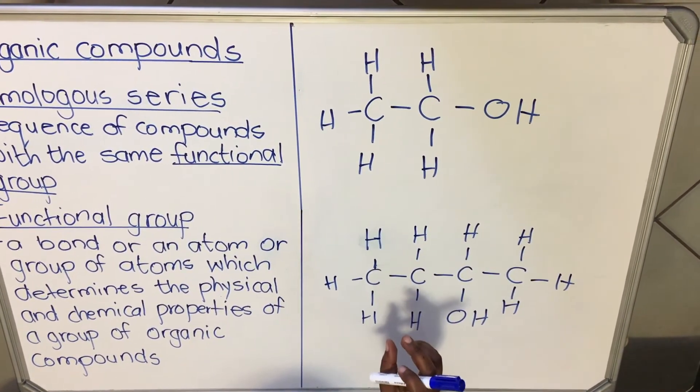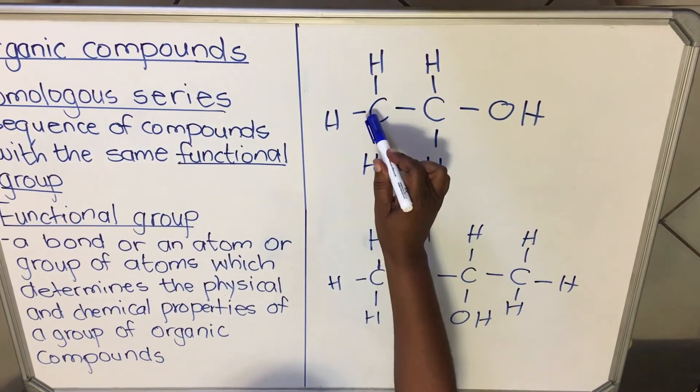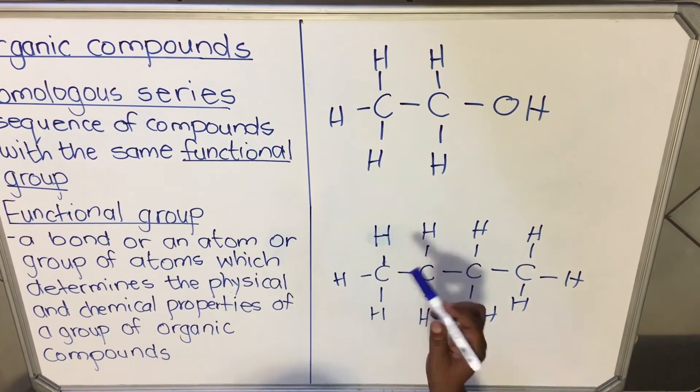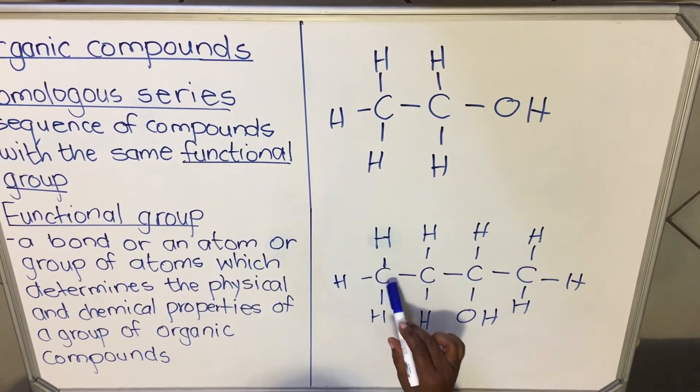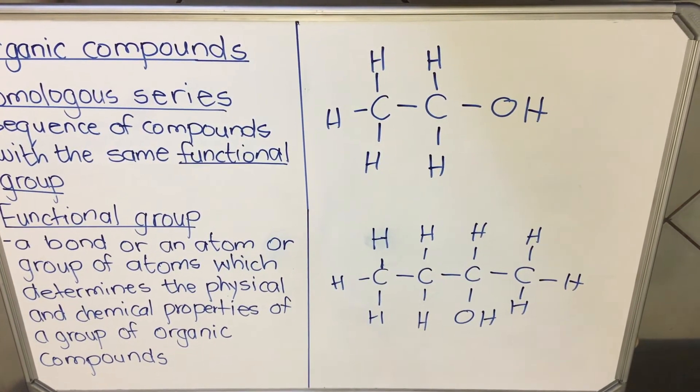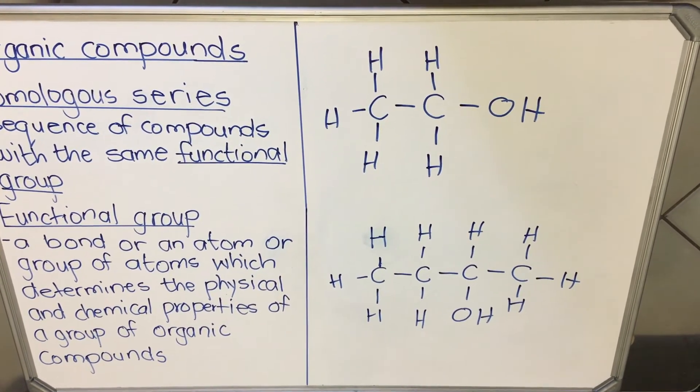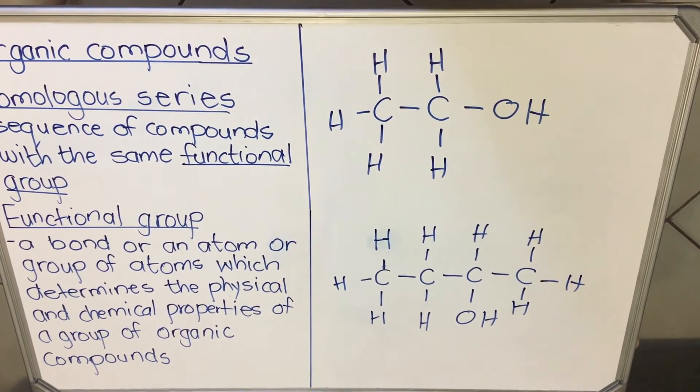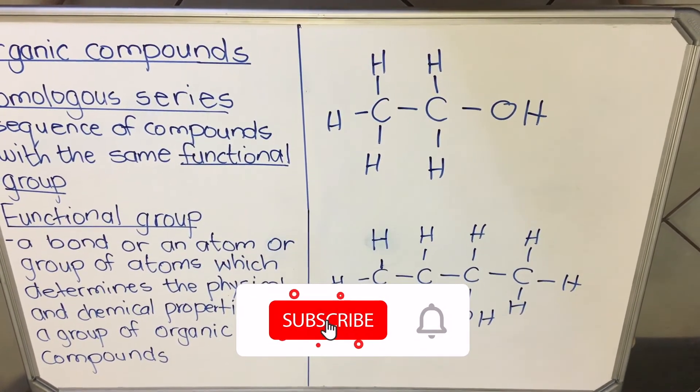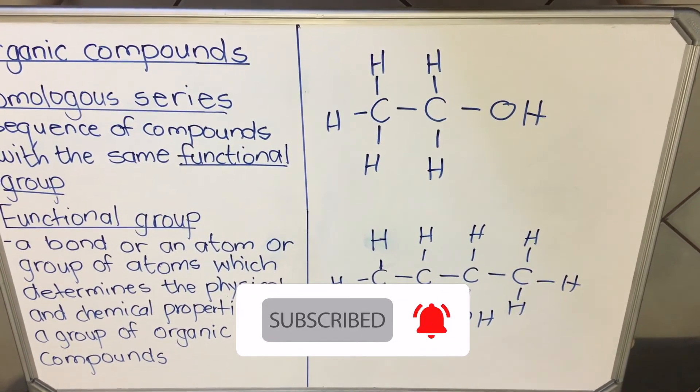Homologous series - the family, the family of alcohols. So the names will be different because it has two carbons, it will have a different name compared to this one with one, two, three, four carbons. But both of them will belong to the same family, the homologous series.